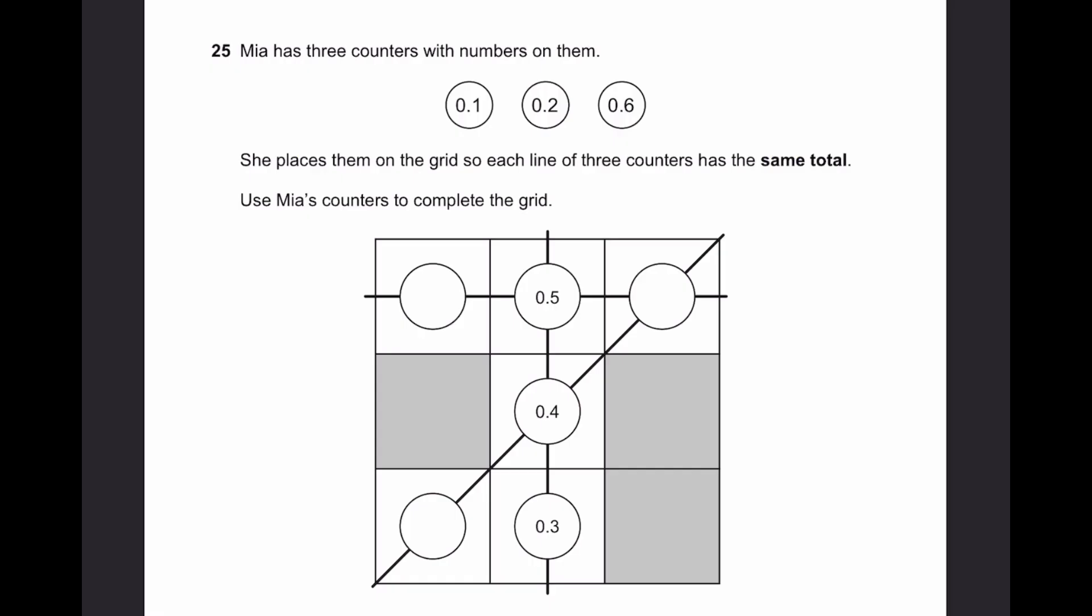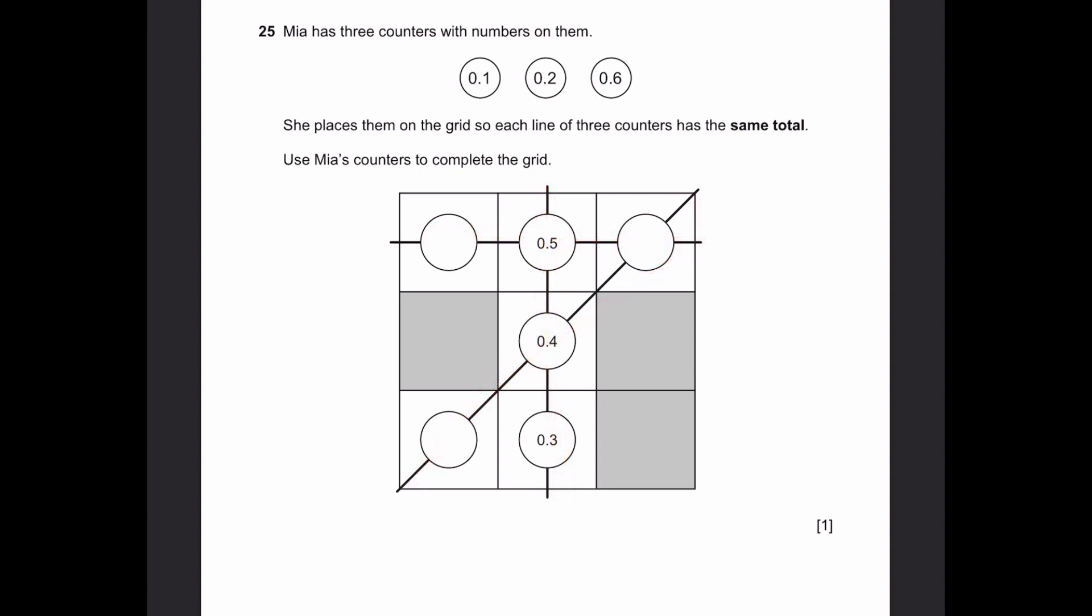Question 25. Mia has three counters with numbers on them: 0.1, 0.2, 0.6. She places them on the grid so each line of three counters has the same total. Use Mia's counters to complete the grid. Each line has the same total, which is 0.5 plus 0.4 plus 0.3, which is 1.2. Adding 0.4 with something and something, we get 1.2. These two numbers, 0.2 and 0.6, are the only numbers which fit. 0.5 plus dash and dash equals 1.2. That will be 0.6 and 0.1. 0.6 appears in both lines, so it has to be in the intersection. 0.2 is here, 0.1 is here.